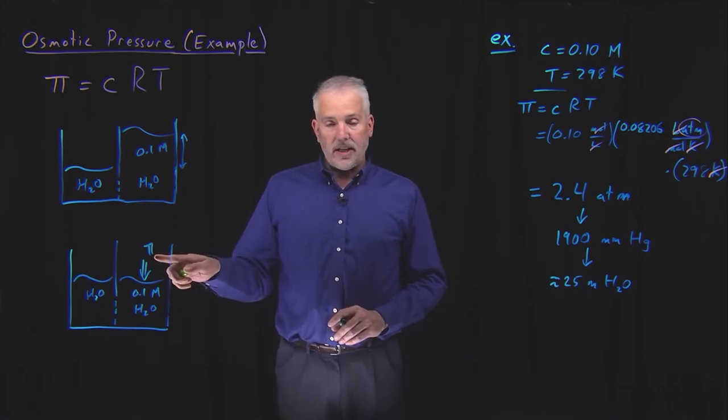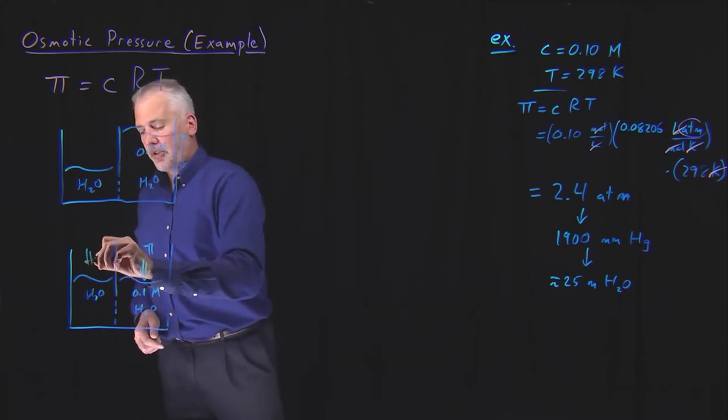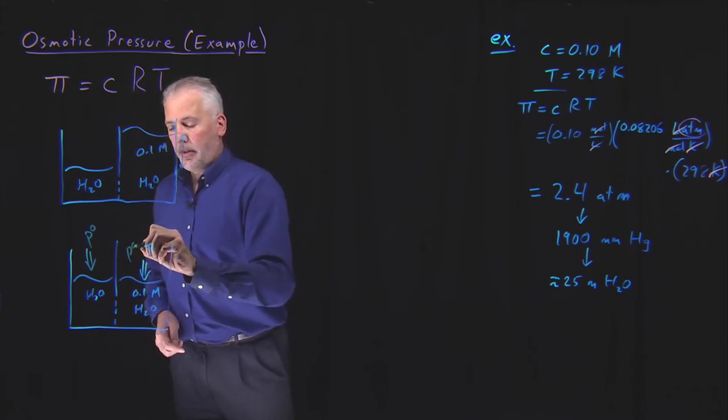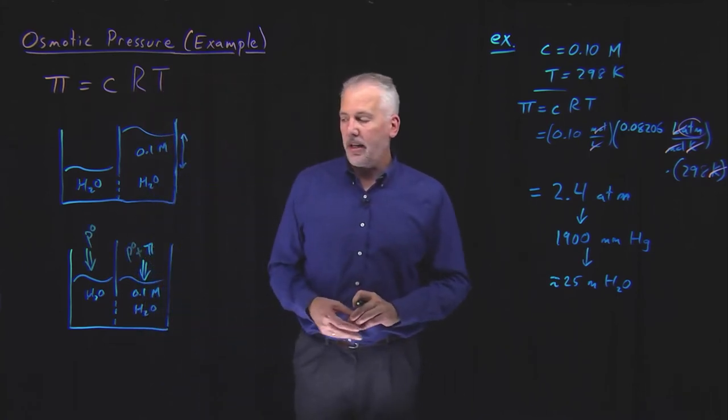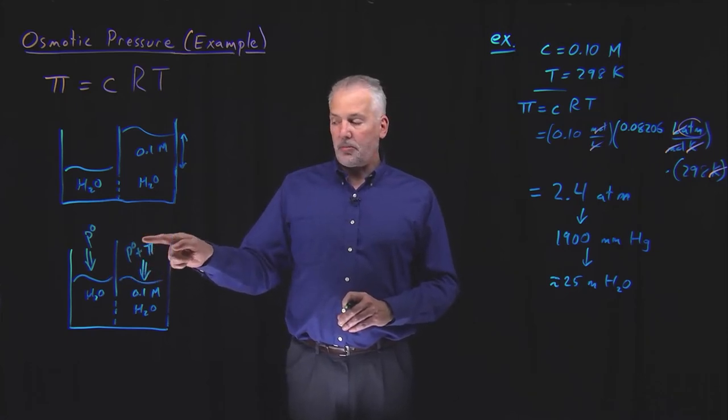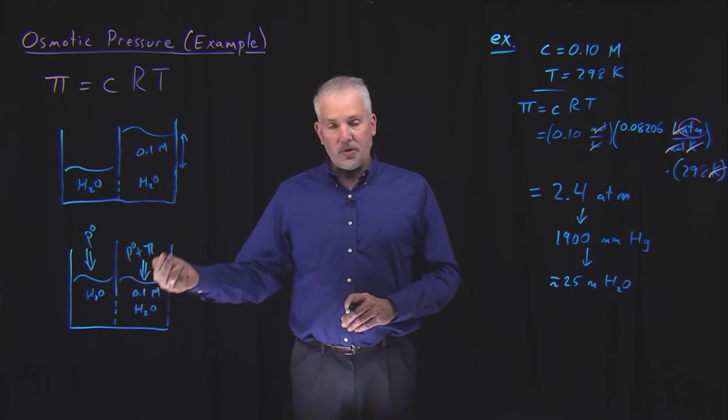If I push less hard than that, if the atmospheric pressure here is p-naught and over here, I push with p-naught plus pi. At equilibrium, if I push with only atmospheric pressure or atmospheric pressure plus a smaller amount, then osmosis will occur.